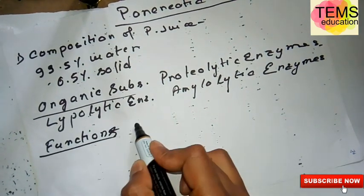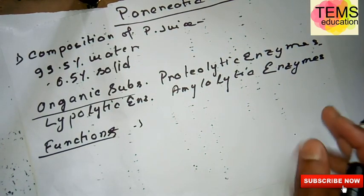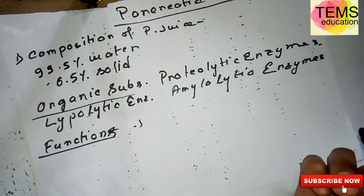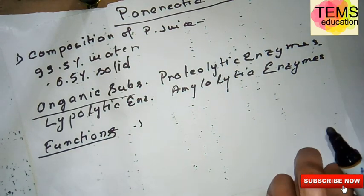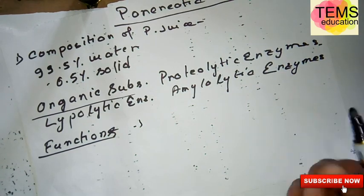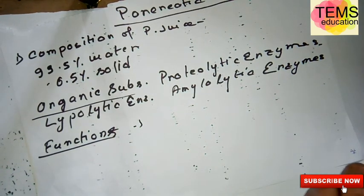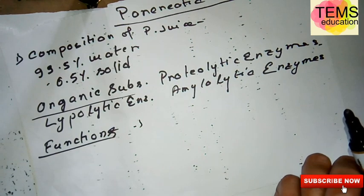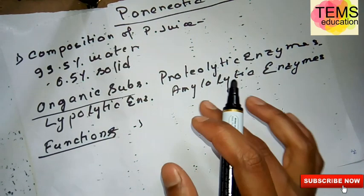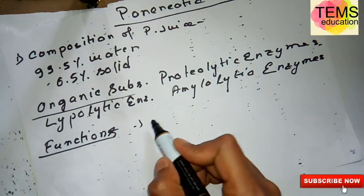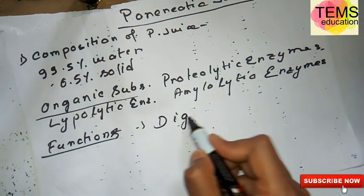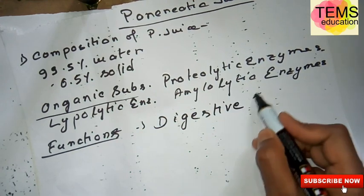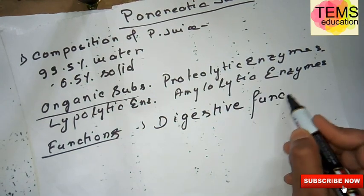Now let's talk about the functions of pancreatic juice. The main function of pancreatic juice is the digestive function. It takes an important role in digestion of proteins, lipids, and carbohydrates.